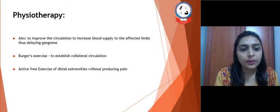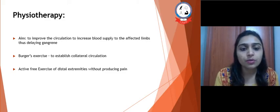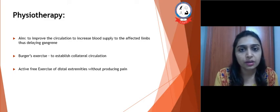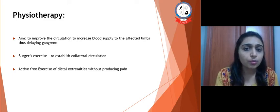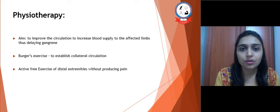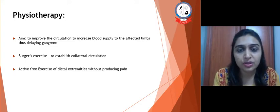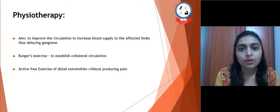Next is physiotherapy. The aim of physiotherapy is to improve circulation and increase blood supply to the affected limbs, thus delaying gangrene. We want to prevent gangrene, as there is no treatment for gangrene other than amputation, and a person would never like to have an amputated limb.